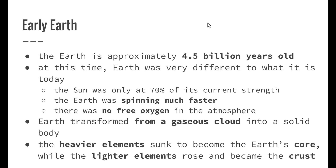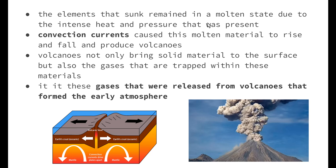It is believed that Earth transformed from a gaseous cloud into a solid body during the formation of the planets. The heavier elements, such as iron and nickel, sunk to become the Earth's core, while the lighter elements rose and formed the Earth's crust. The elements that sunk to form the core remained in a molten state due to intense heat and pressure.